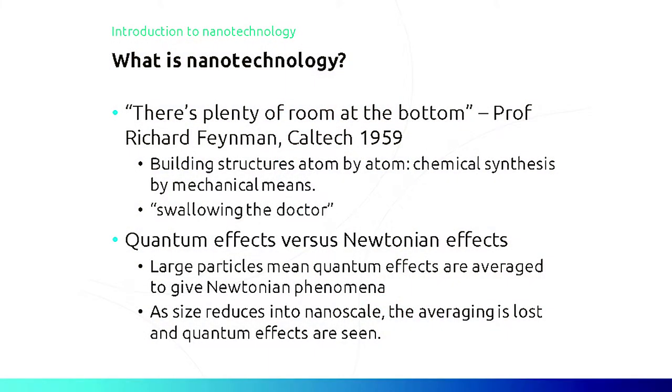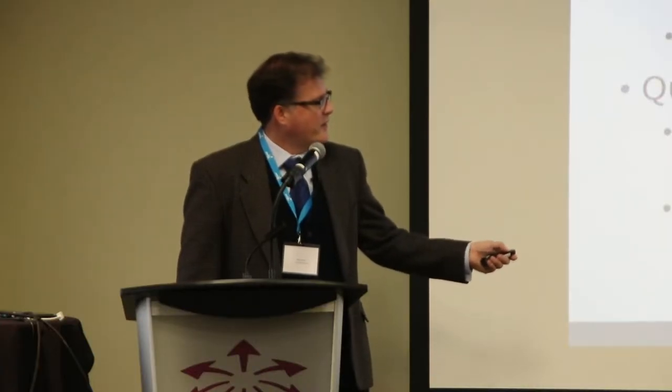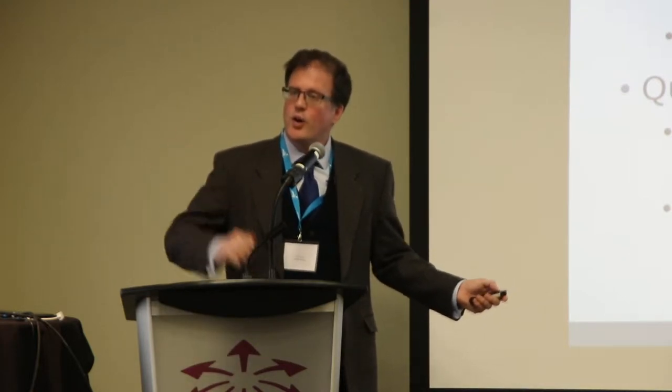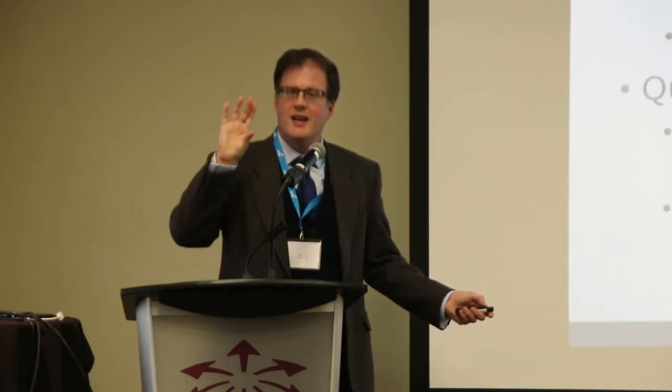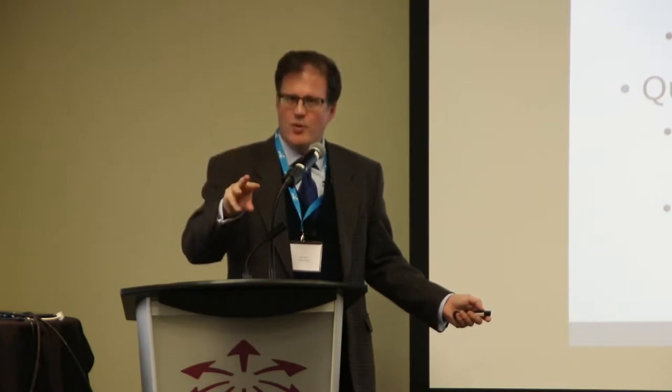When we're down at this level of size, we start having quantum effects taking over, rather than what we'd call Newtonian effects, which we see with bulk substances. When you have a bulk substance, you end up having a large amount of averaging out of all the quantum effects, so you end up just seeing things like a continuum — say, the application of a force and how it accelerates. Whereas with quantum effects, you're looking at particular specific energy gaps, where something happens at one energy or another, and nothing happens at an energy in between. So you have a much more stepwise behaviour.